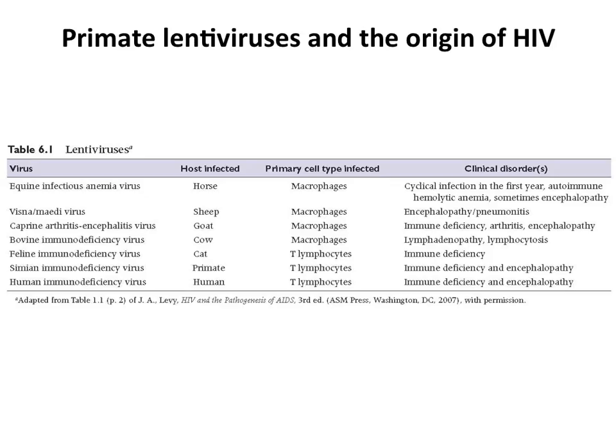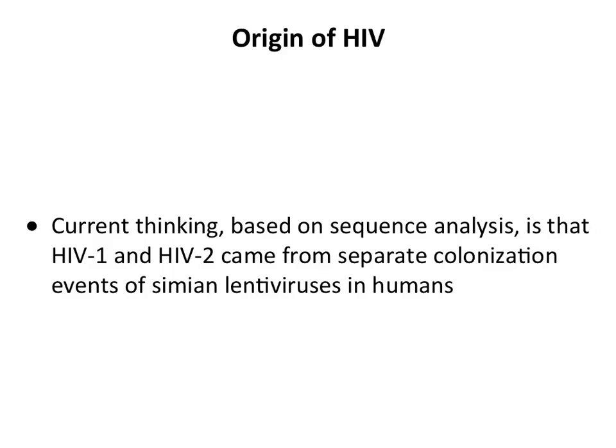HIV is a zoonosis — a virus infection of humans that originated in animals. We need to look at lentiviruses of different animals: horses, sheep, goats, cows, and cats all have their own lentiviruses that cause immunodeficiency-type infections. Simian immunodeficiency virus has probably been around for many years. The current thinking is that HIV represents a cross-species jump of SIV from certain primates into people. HIV-1 and HIV-2 came from separate colonization events — a jump of a virus from infected animals to humans, involving SIVs.